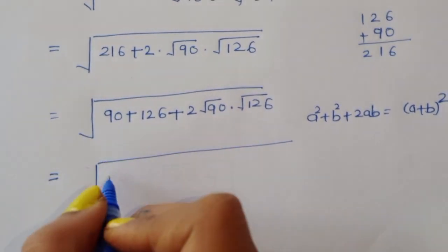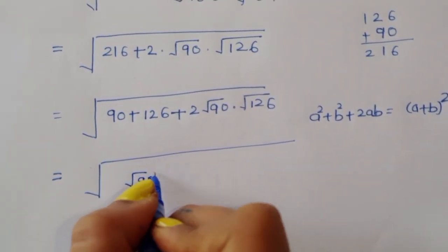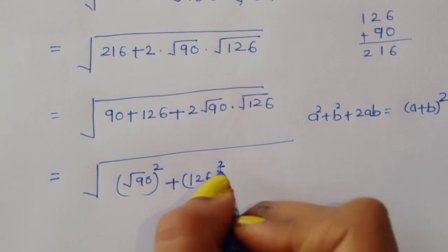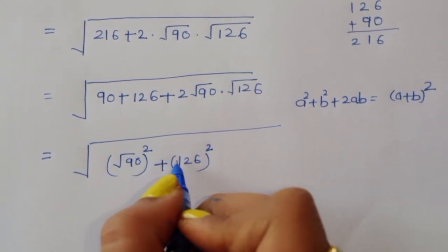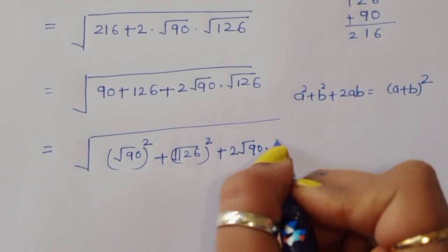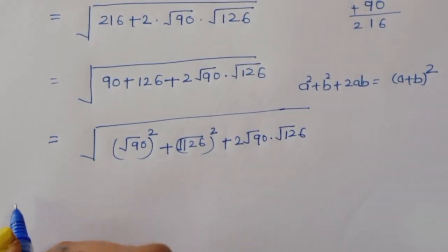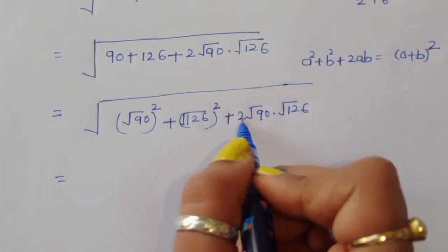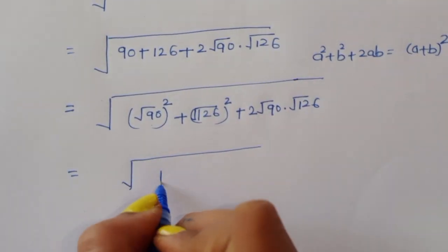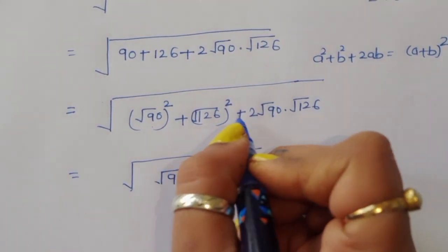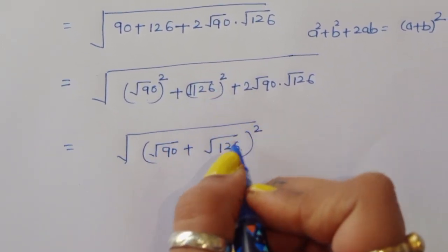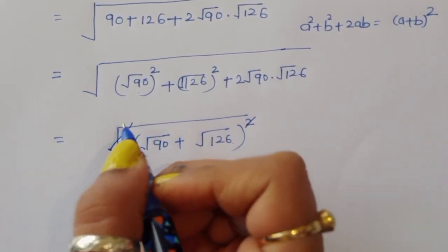Here a is square root of 90 and b is square root of 126. We can write (square root of 90) squared plus (square root of 126) squared plus 2 times square root of 90 times square root of 126, which equals (square root of 90 plus square root of 126) squared. Taking the square root cancels the square, leaving square root of 90 plus square root of 126.